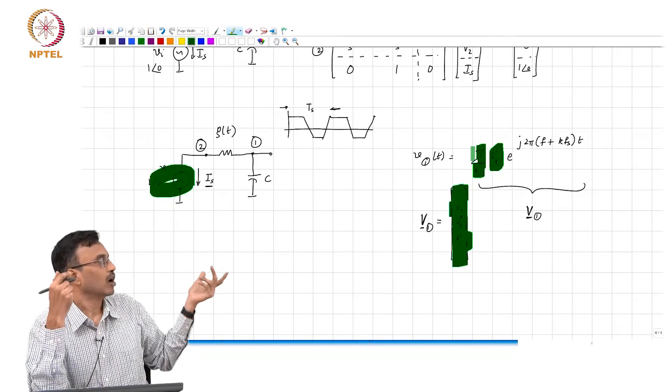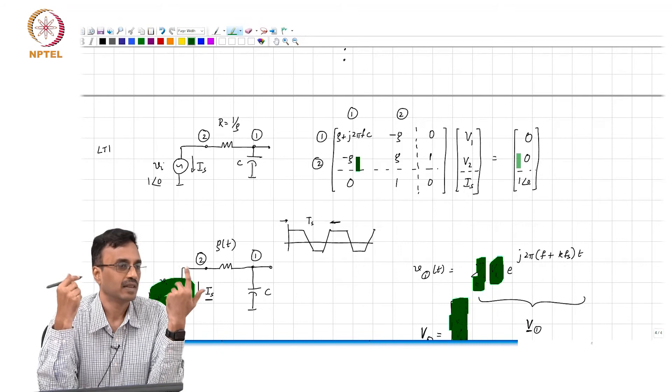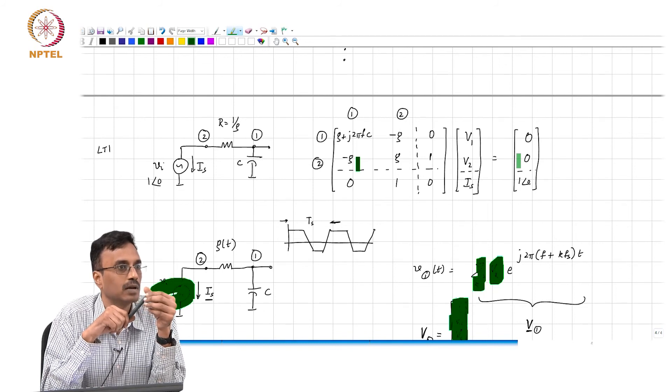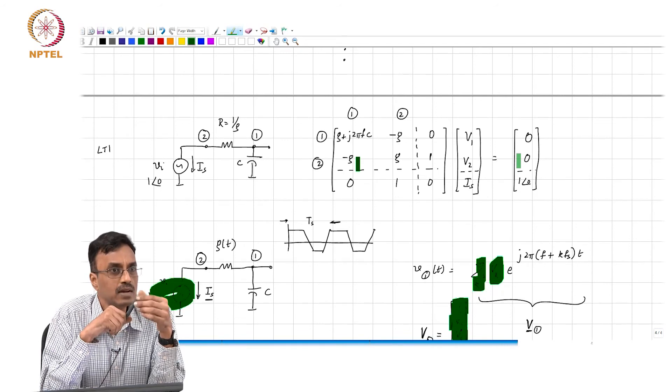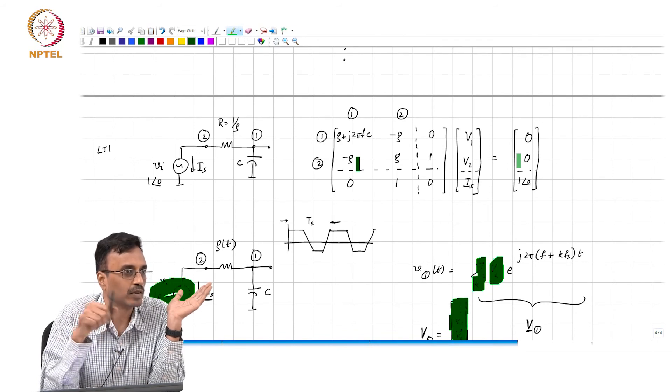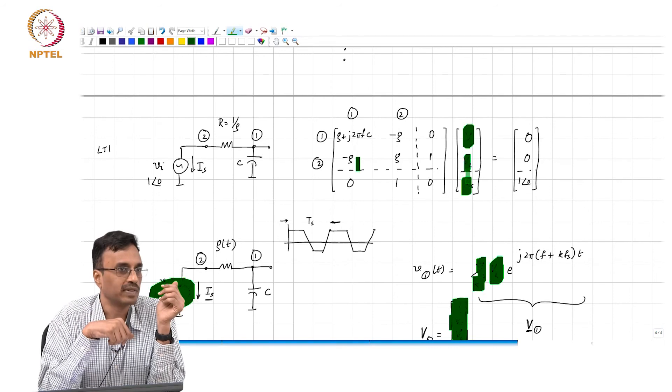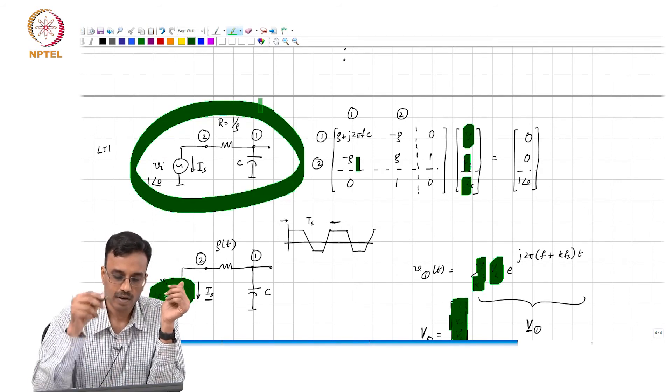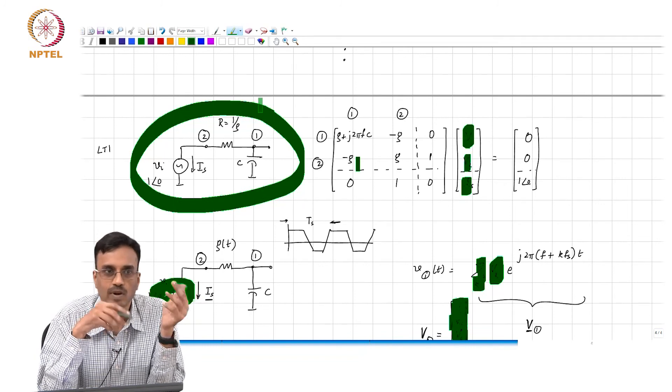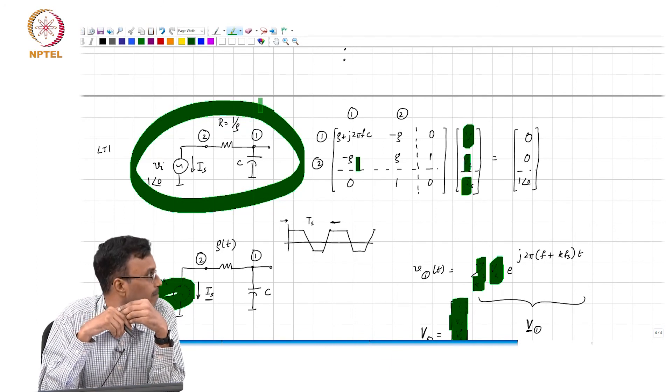So then how many sets of KCL, KVL equations will you have now? In the time invariant case we had 3 equations, 3 unknowns. Now how many equations will we have? If you restrict K to be 1000, then well it is not 3000 but 6000, because you go from minus 1000 to 1000 for each one of them. So you have roughly 2000 unknowns here, 2000 here and 2000 here. So basically what was literally child's play - now even a simple first order RC network becomes a set of equations with 6000 variables.